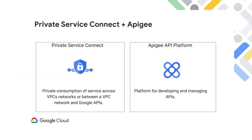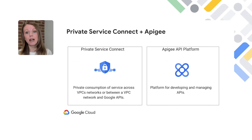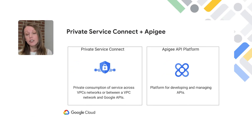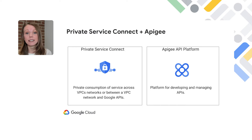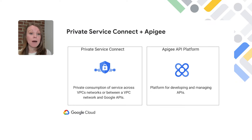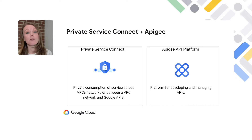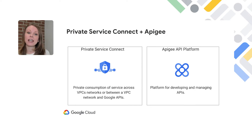Private Service Connect is a new method of routing within Google Cloud that allows private consumption of services across VPC networks that belong to different projects or organizations. It can be used to access Google APIs and services or managed services in another VPC network. Customers using Apigee as their API gateway to secure their APIs can now make use of PSC to provide access patterns to and from the Apigee platform.